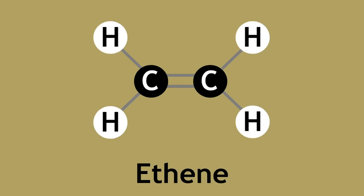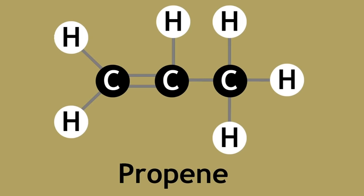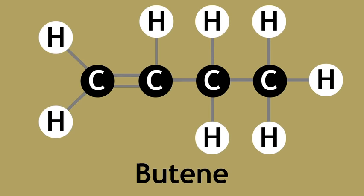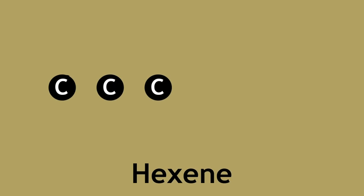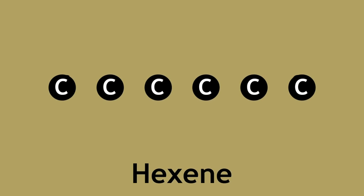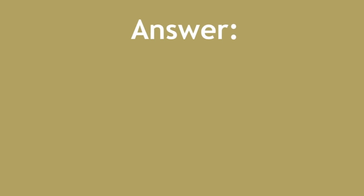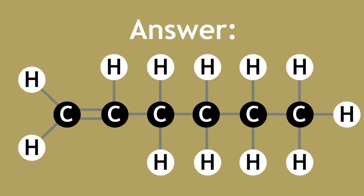These also follow a pattern, and the next molecule in the series is propene and then butene. Pause this video now and try to draw the structure of hexene. As before, hexene has six carbon atoms. Here is the structure of hexene. This time there is a double bond because it's an alkene.